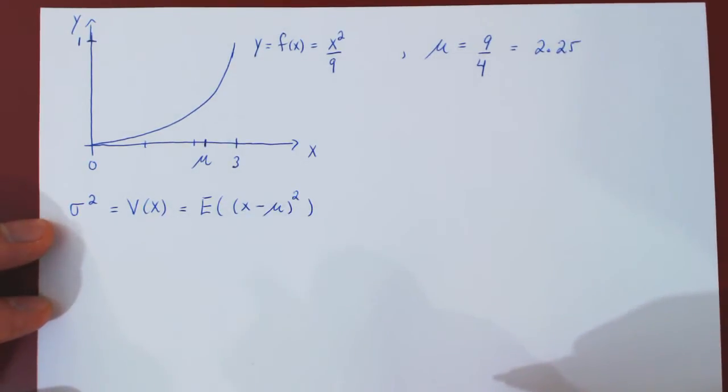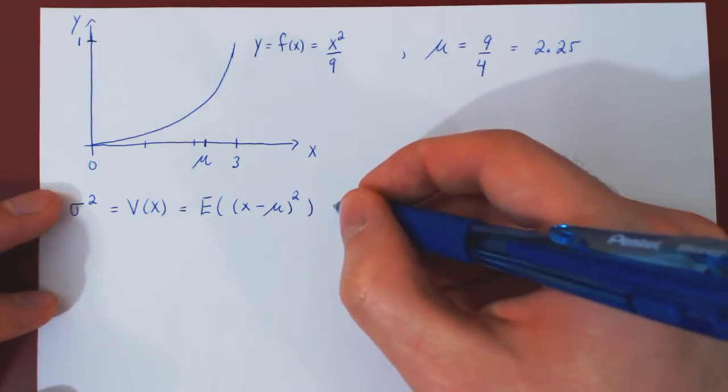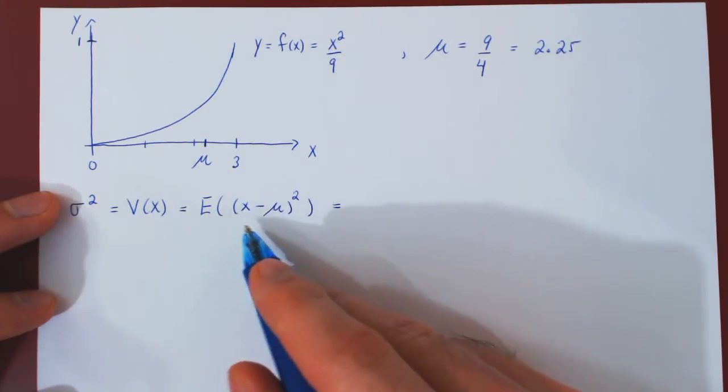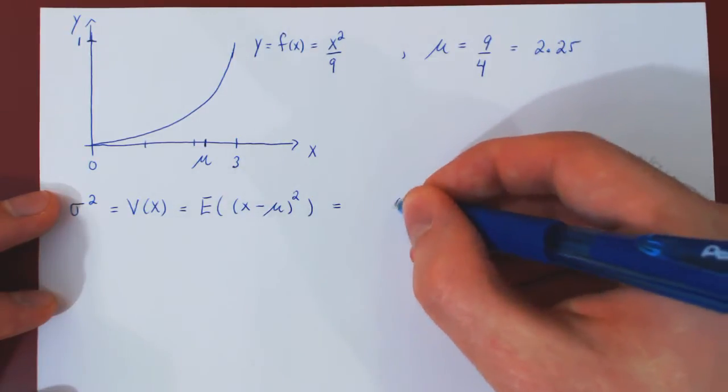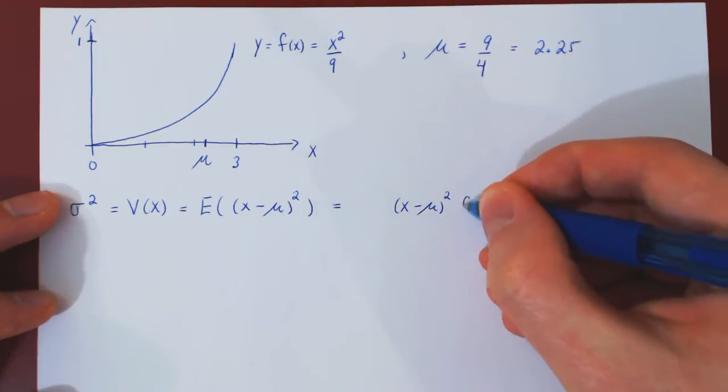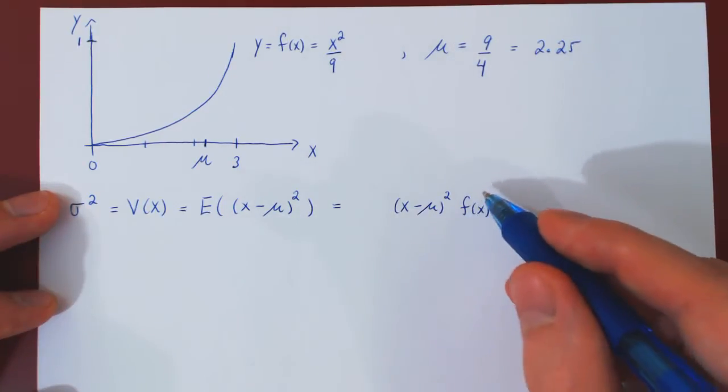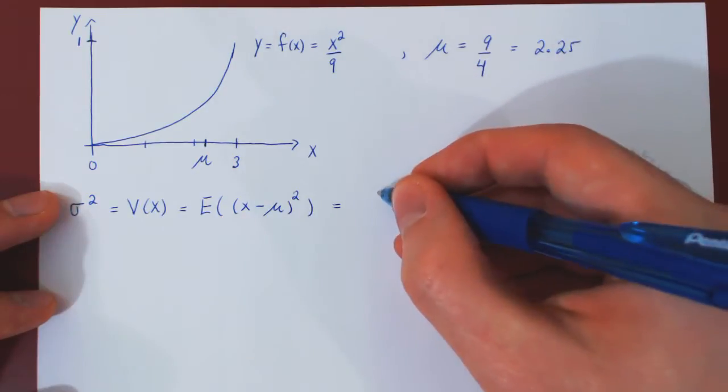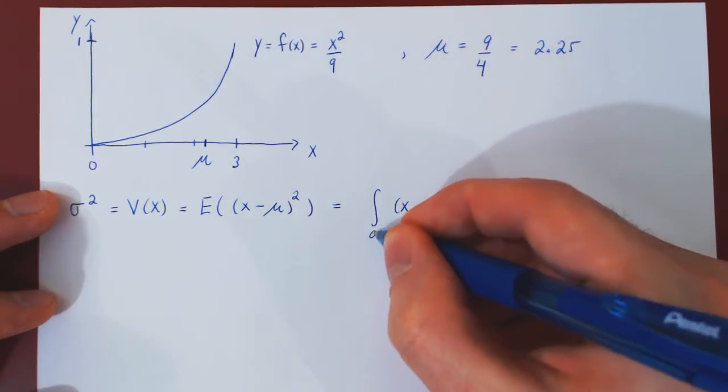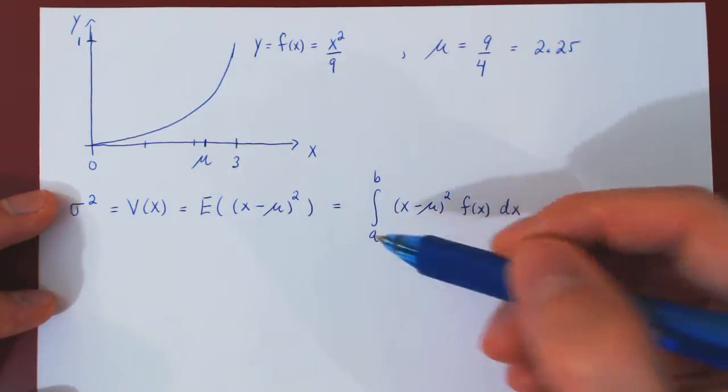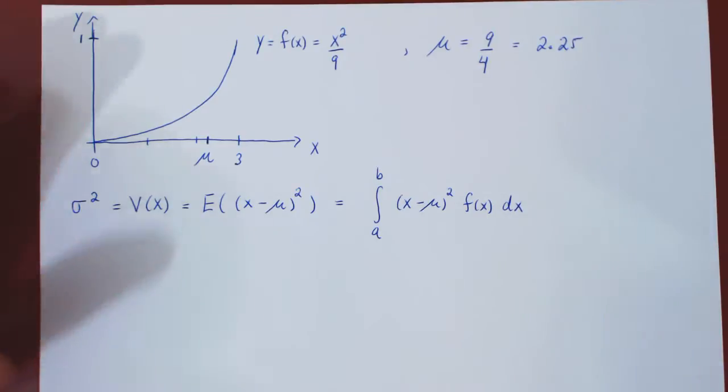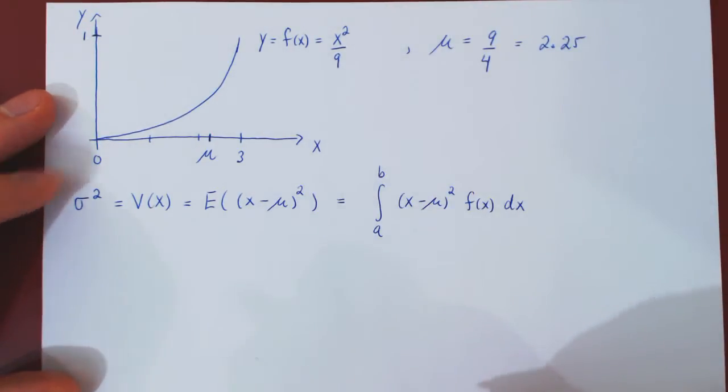Well, to find the expectation of a random variable, we have to first multiply the variable by its relative weight, given by the density function. And we have to sum, we have to integrate all of those values, over the entire range of possible x values. This is a general formula, but now we can substitute in this special case.